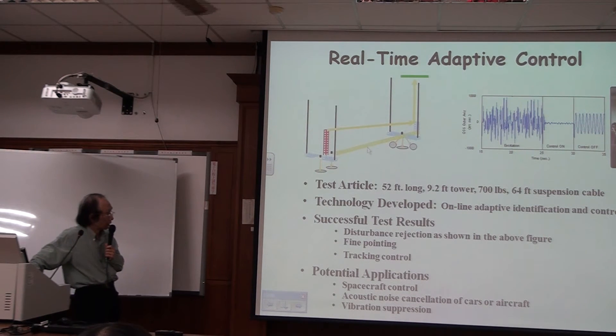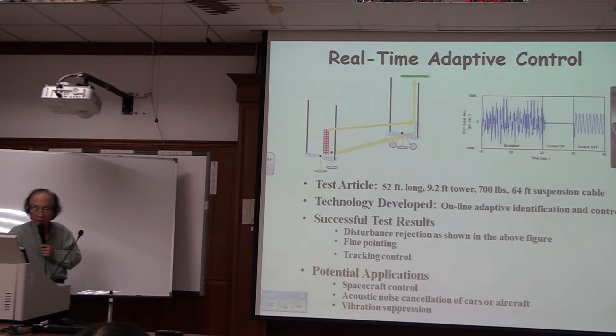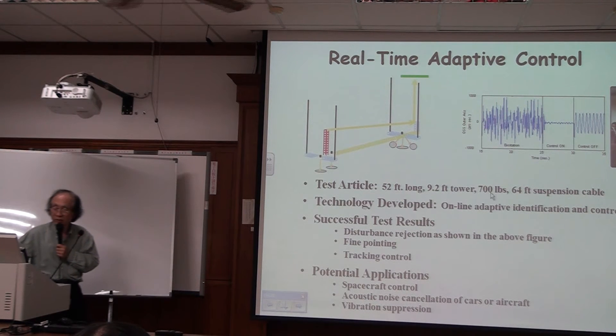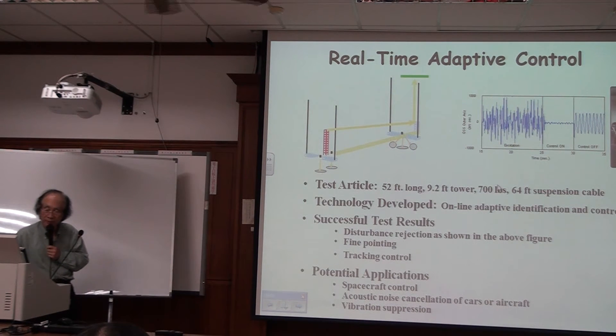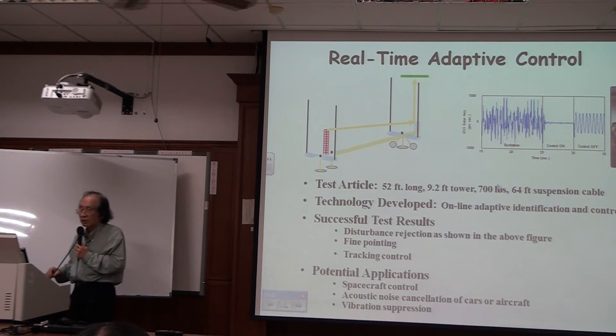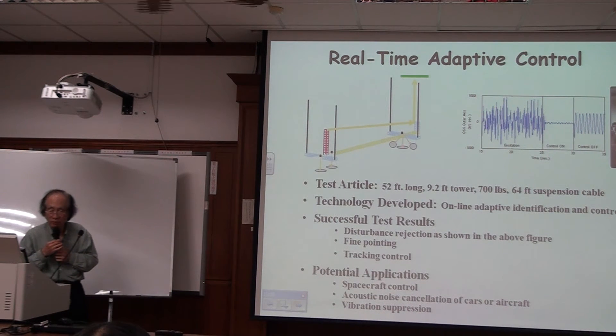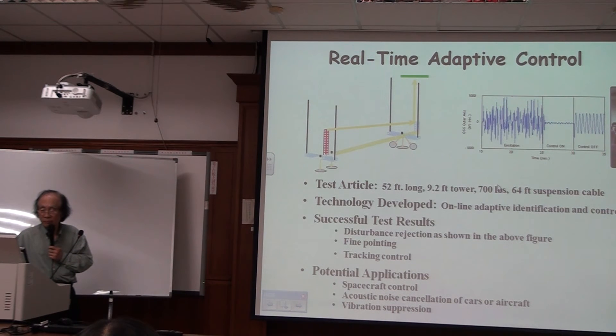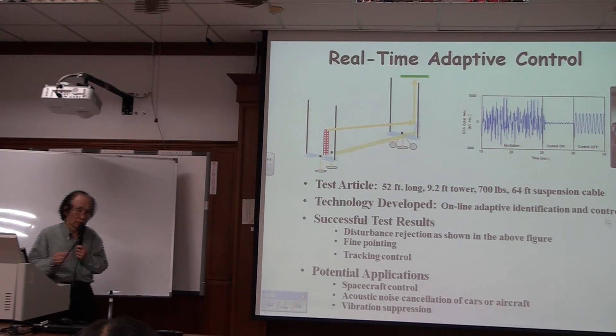And so on, and there is a suspension system here. Okay, now this is to test real-time adaptive control. Now what do we mean real-time adaptive control? It means we have online adaptive identification and control.